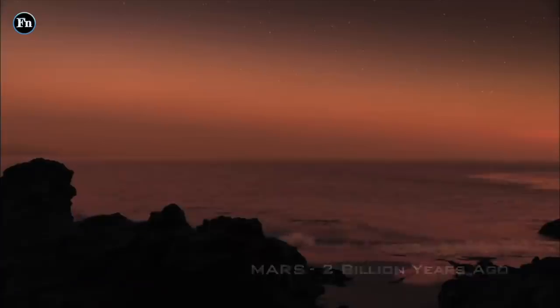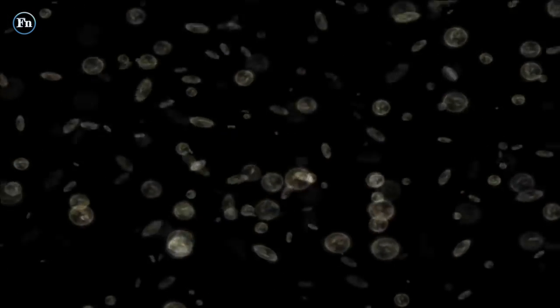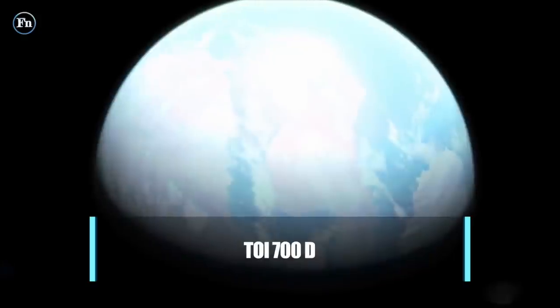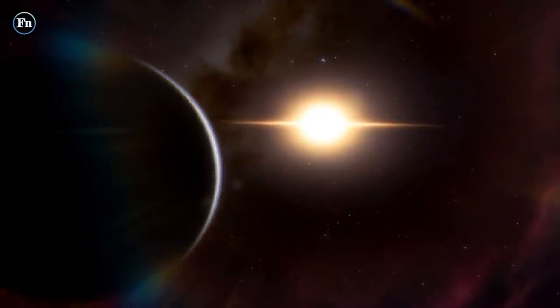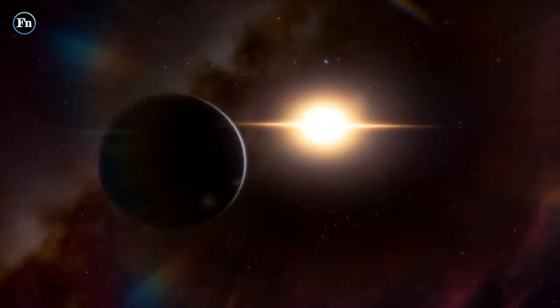Number 1: TOI 700 d. Our last planet on the list, TOI 700 d, was discovered by the Transiting Exoplanet Survey Satellite, TESS. This was the first Earth-sized exoplanet found by TESS.